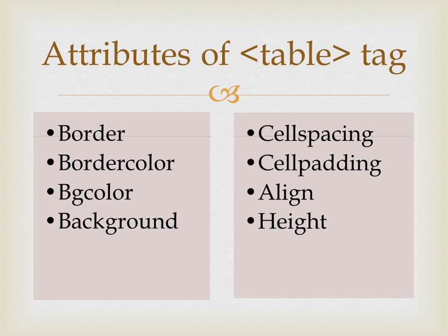Then comes cellspacing and cellpadding. Cellspacing gives the amount of space between the cells. Cellpadding gives the space between the cell border and the content of the cell. So the space between cells is cellspacing, and the space between the cell border and its content is cellpadding.